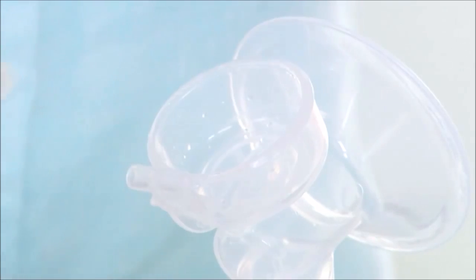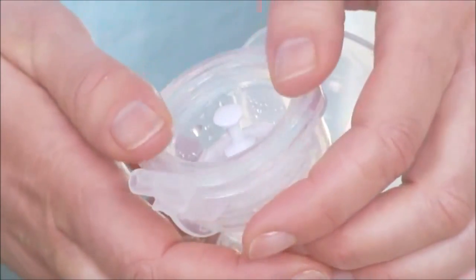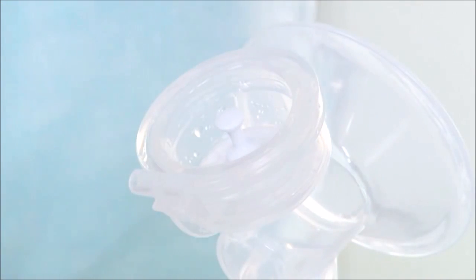Place the silicone diaphragm with stem into the pump body from above. Make sure it fits securely around the rim by pressing down with your fingers to ensure a perfect seal.